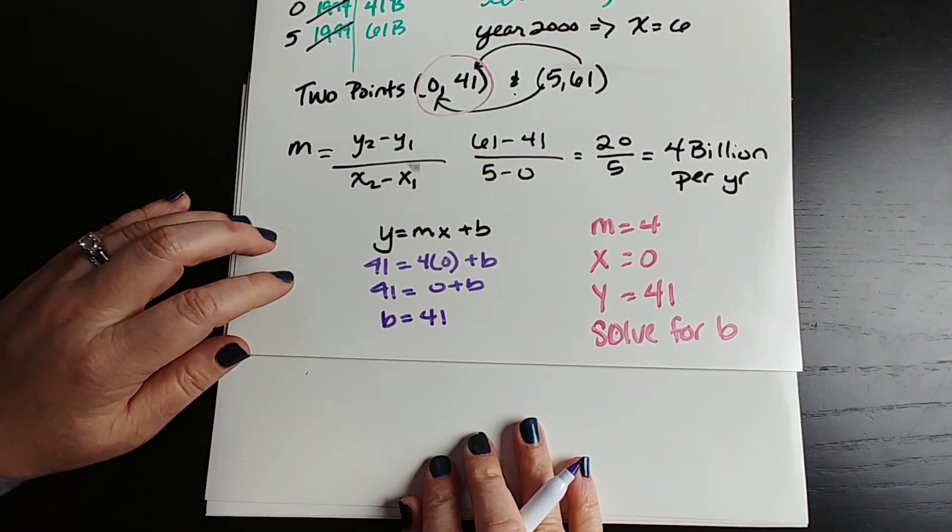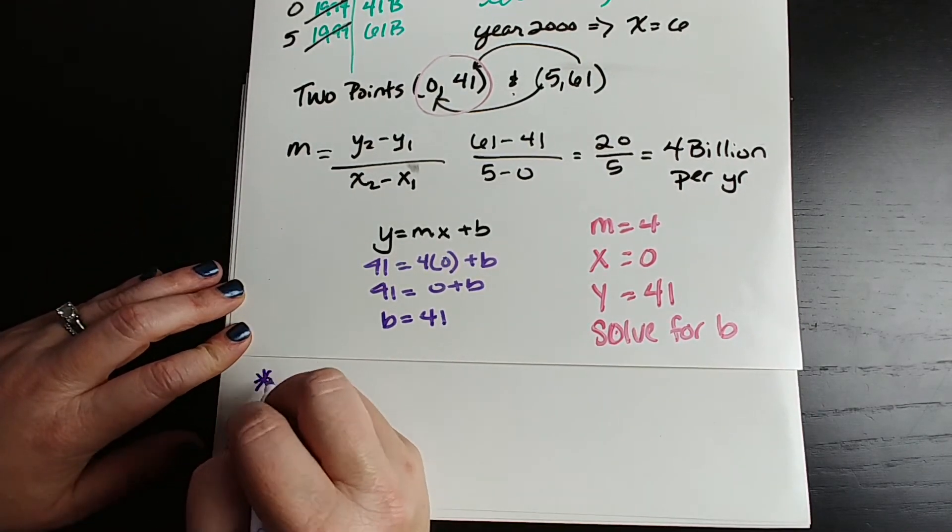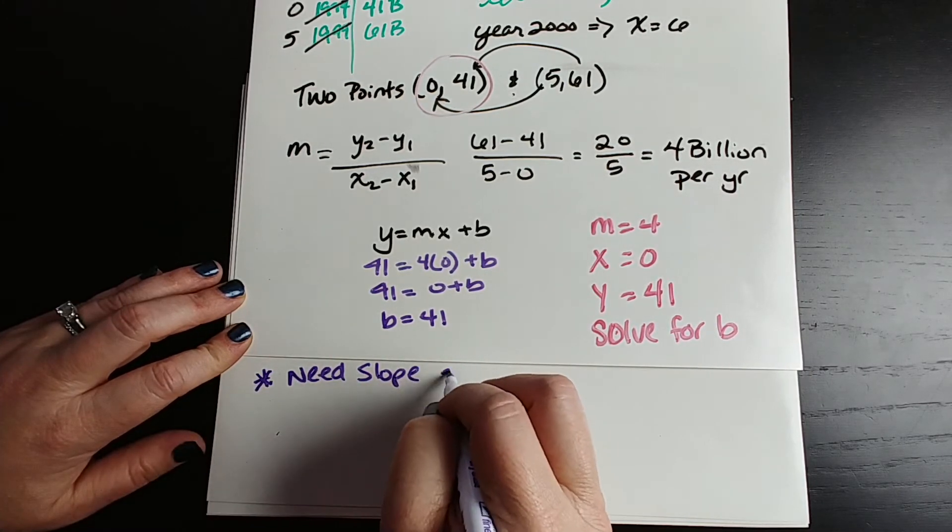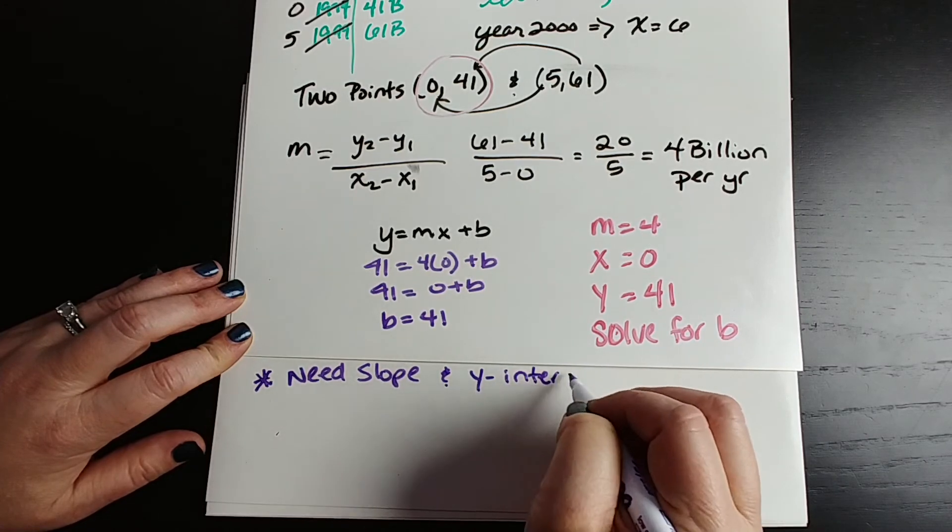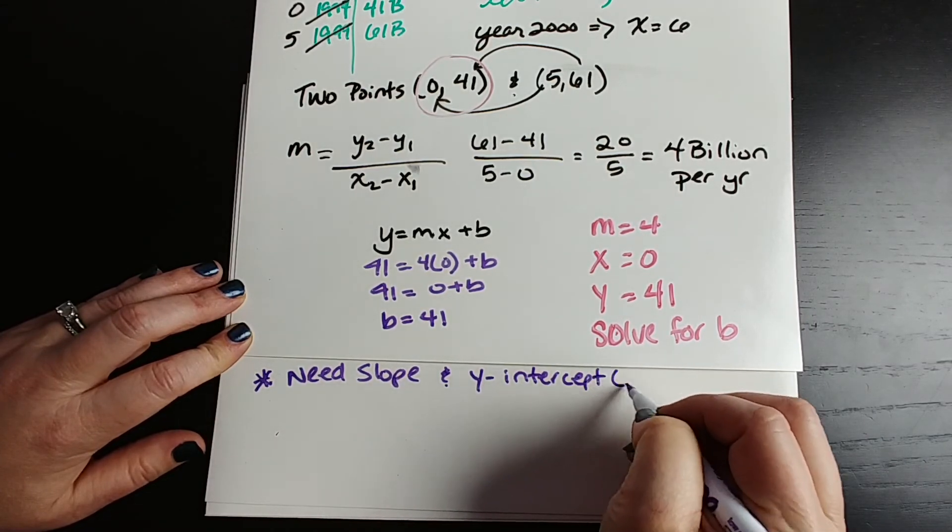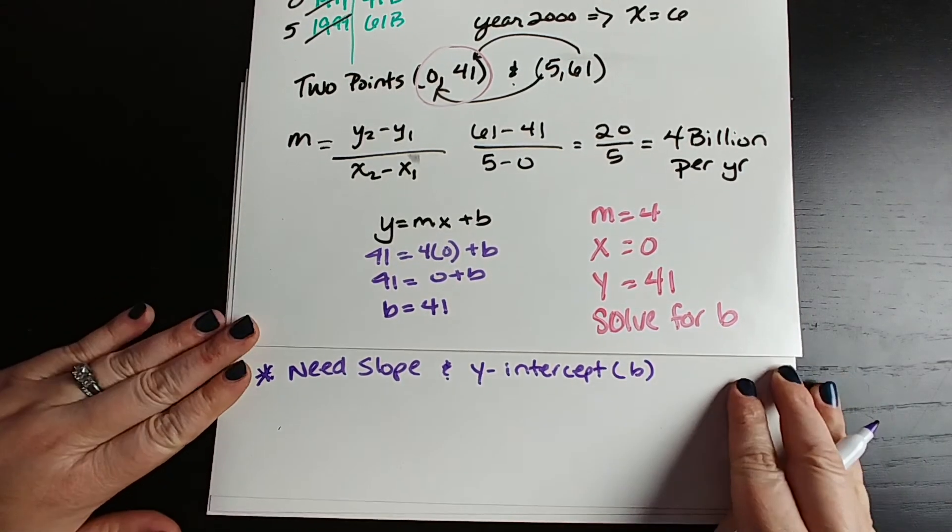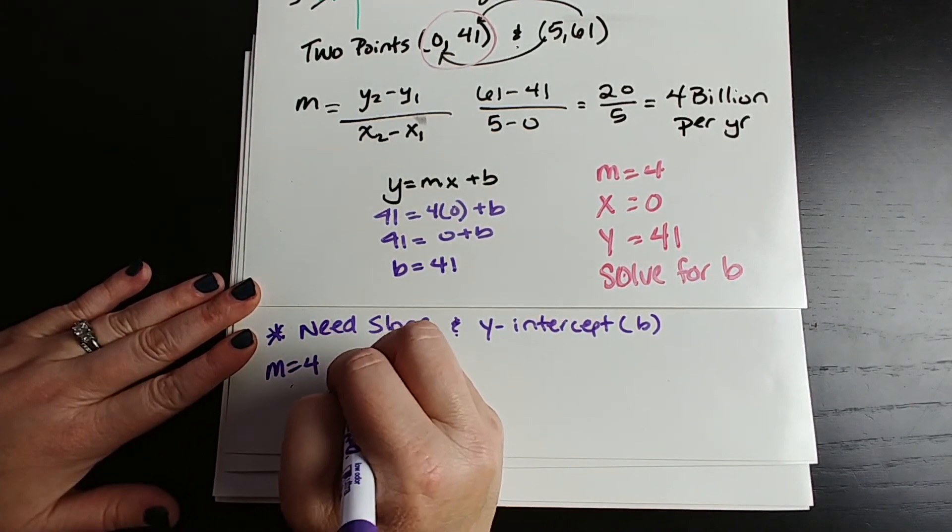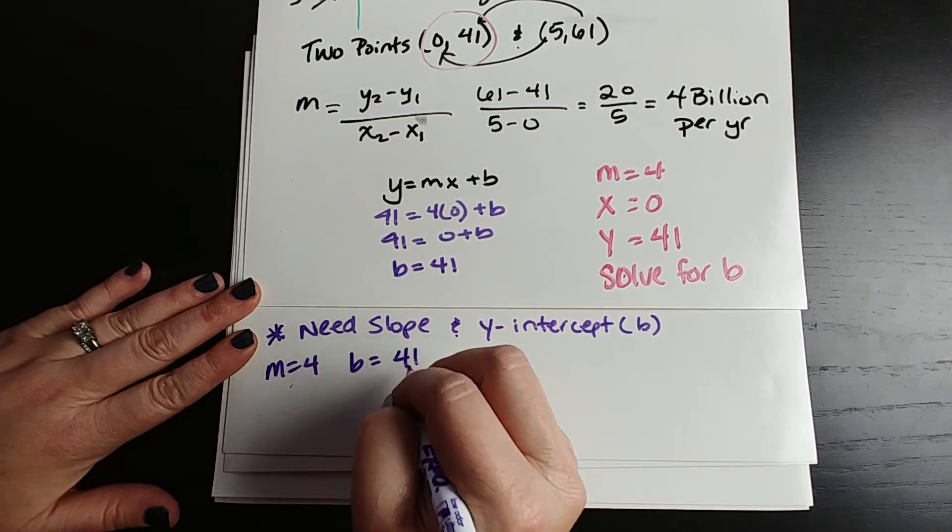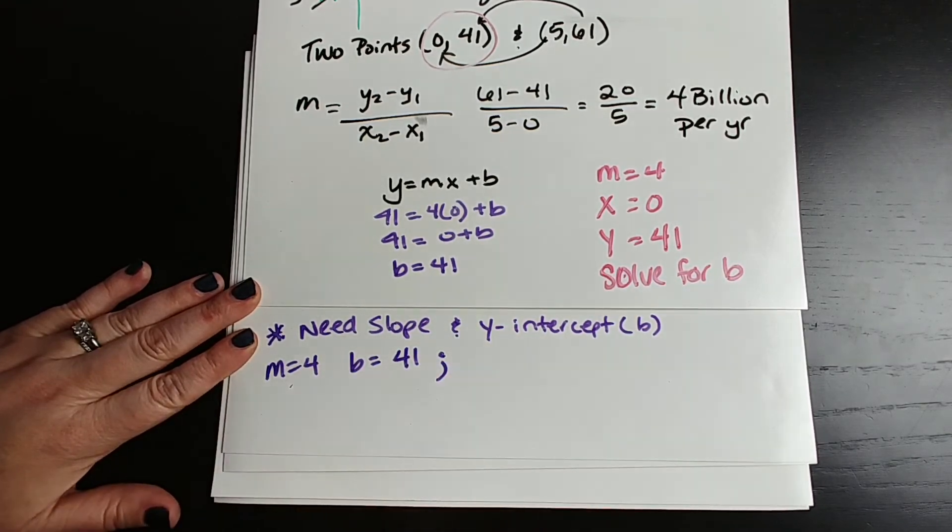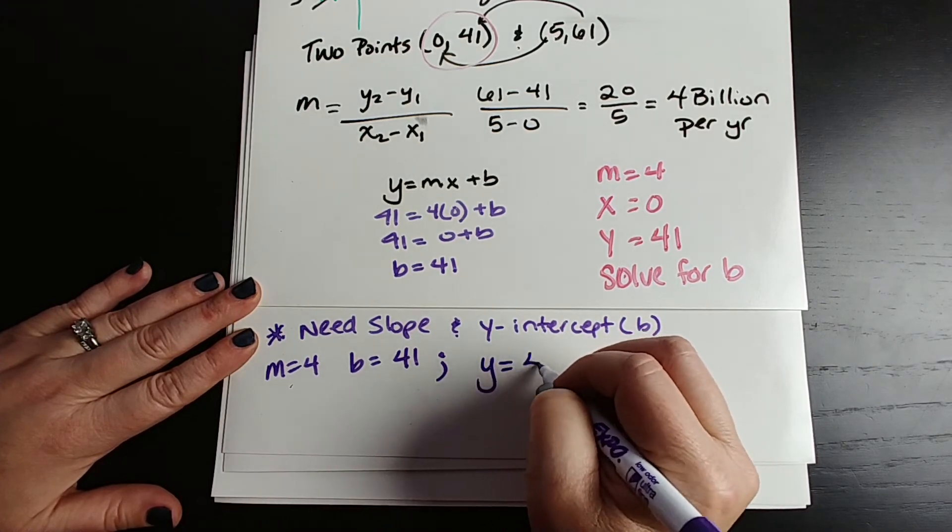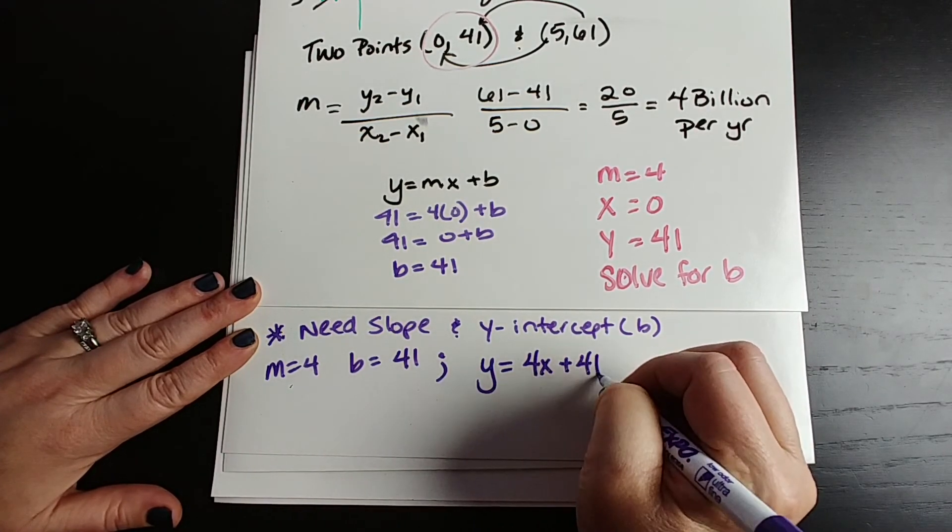All right, the only two things you need for a linear equation, so you need slope, and you need your y-intercept, and that is your b, and we have both of those now. So we have m equals 4, we have b equals 41, so our linear equation that represents this scenario is y equals 4x plus 41.